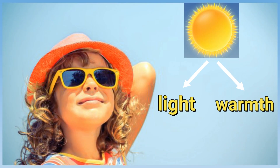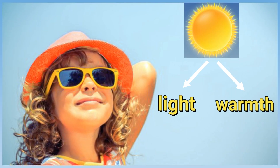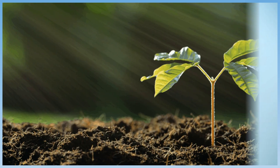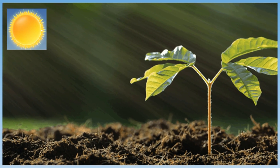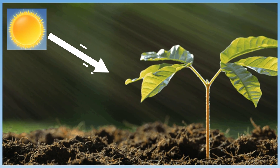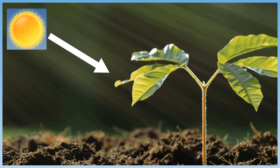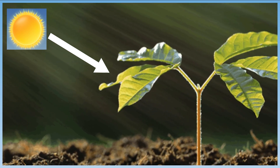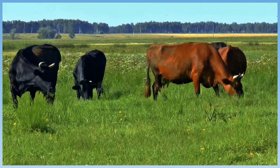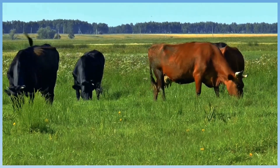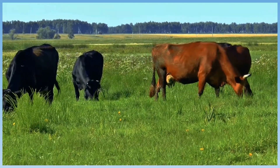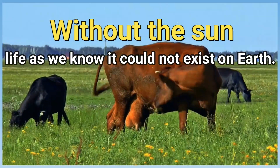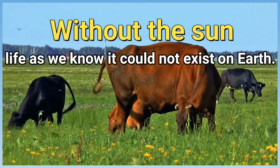The sun gives us light and warmth. Plants need sunlight to grow. Without the sun, plants could not survive. Animals that eat plants couldn't survive either. Without the sun, life as we know it could not exist on Earth.